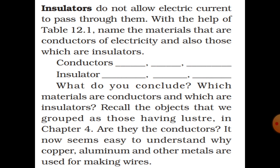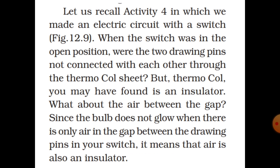Recall the objects that we grouped as those having luster in Chapter 4 — are they the conductors? It now seems easy to understand why copper, aluminum and other metals are used for making wires.